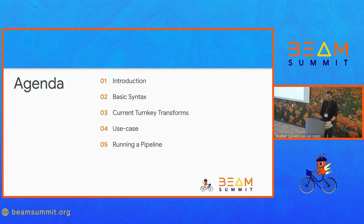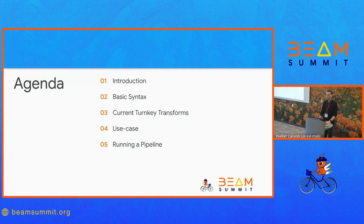A little agenda for you. We're going to do a little introduction on what Beam YAML is, its purpose, and how it fits into the Beam ecosystem. We'll go over some basic syntax — this is just an overview of what it is and how it works. Some of our current turnkey transforms and how you can get started with a pretty basic pipeline. Then I'm going to do a use case, and finally, how to actually run a pipeline.